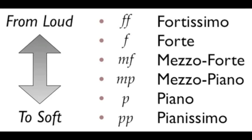This chart demonstrates for you all of the dynamic markings — how loud, how soft you play the piece. The most intense one is the fortissimo at the top, and at the very bottom you have pianissimo, the softest.